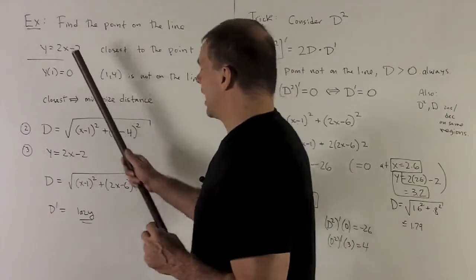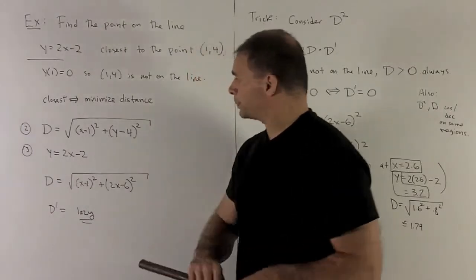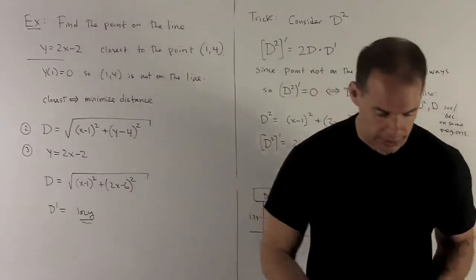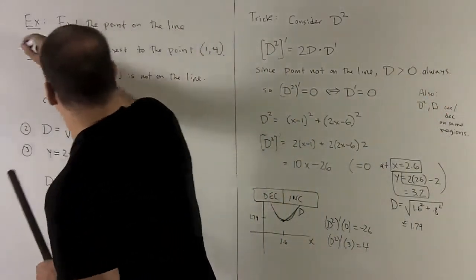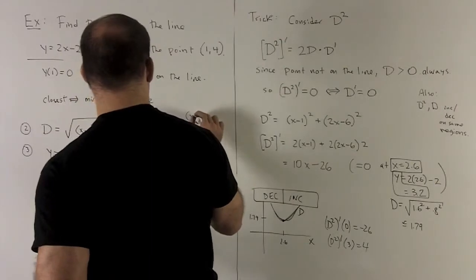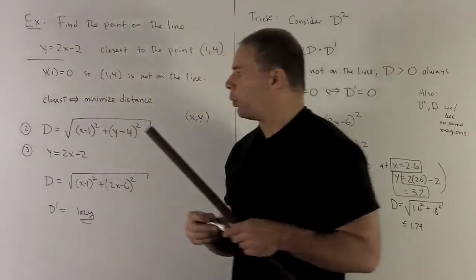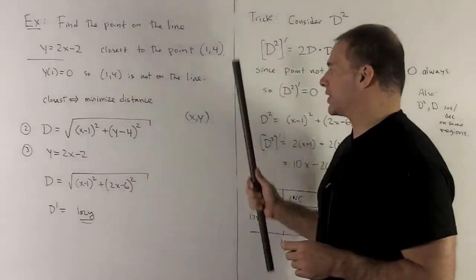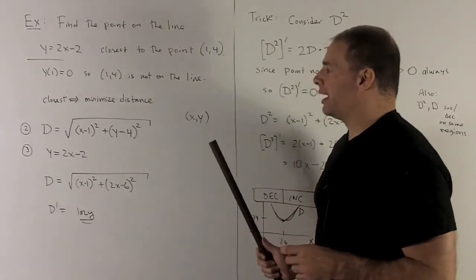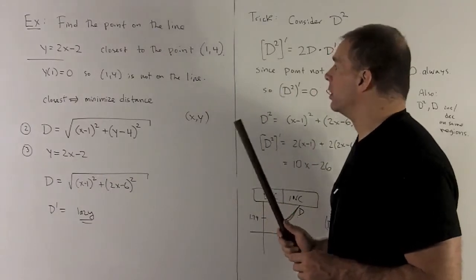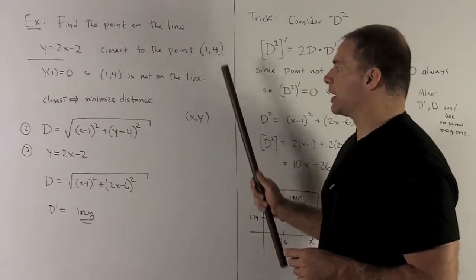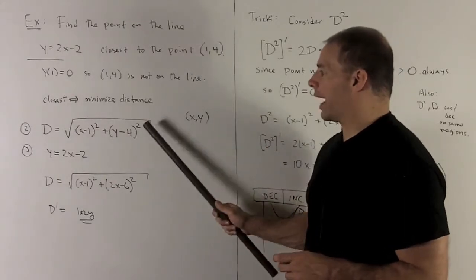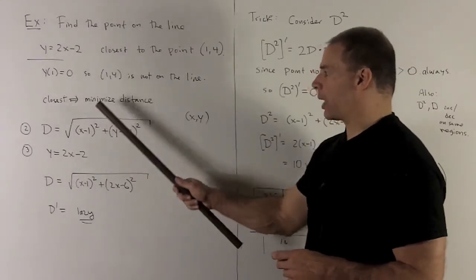I have a point. I have a line. If I want to take a general point on the line, that'll be in the form x comma y. And then my distance formula just says, take the difference in the x's, difference in the y's, square them, and then take square root of that sum. So difference in x's gives me x minus 1, squared, y minus 4, squared. We add them, and then square root of the whole thing.